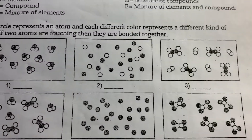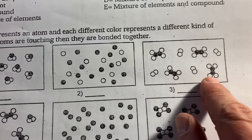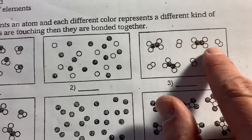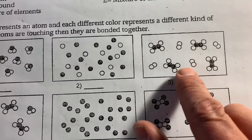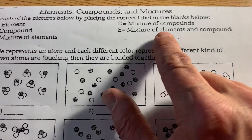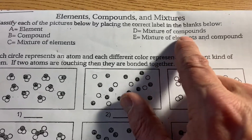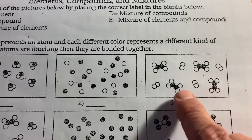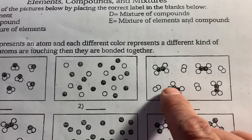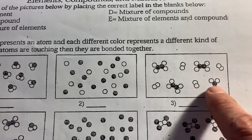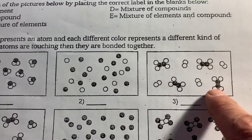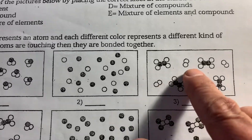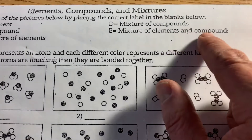Going to the next one, we have a bunch of molecules here, but they're not all the same kind of molecule. These four are the same, and these four are the same. So we have a mixture — it's either a mixture of two compounds or a mixture of an element and a compound. This is where it gets a little tricky. These molecules are made of different kinds of atoms, so these are compounds. But then this other group — they're all the same atoms. So this is a mixture of an element and a compound.